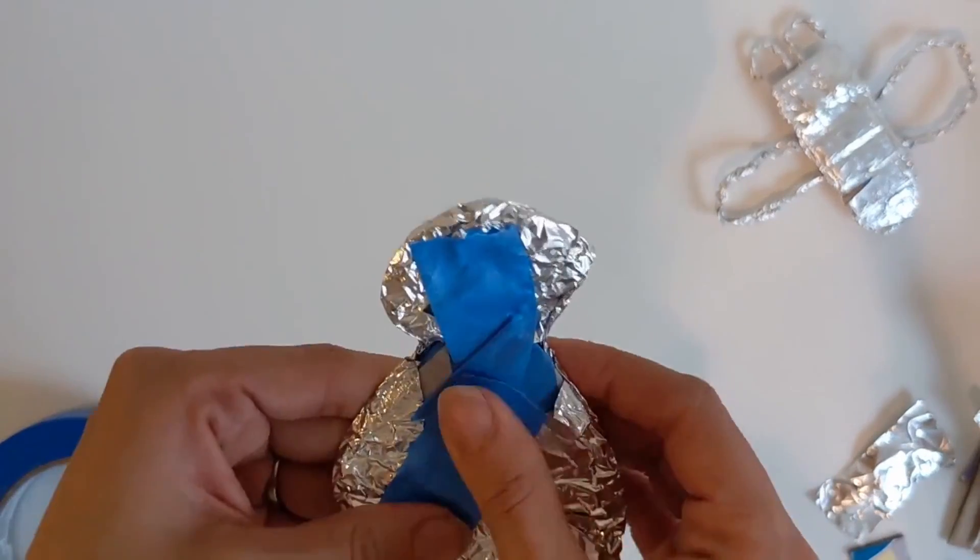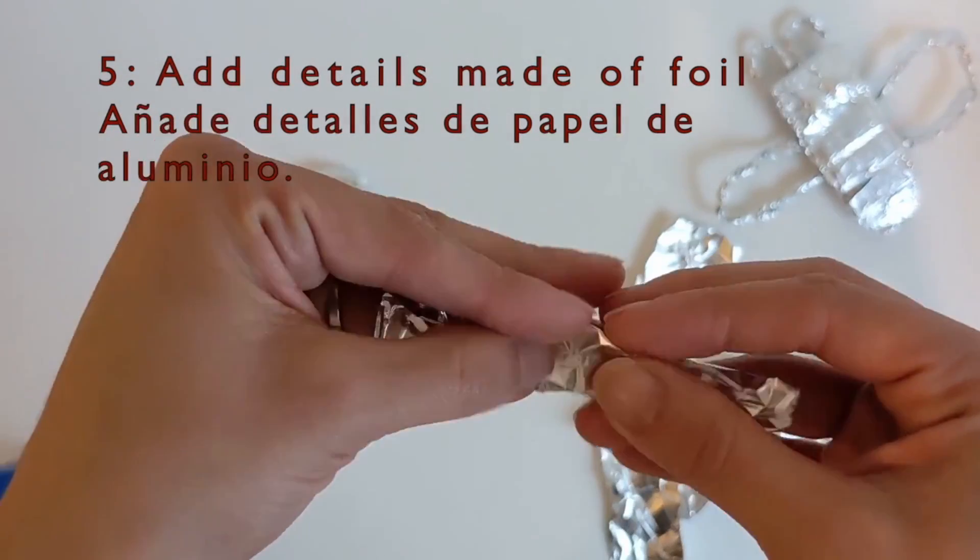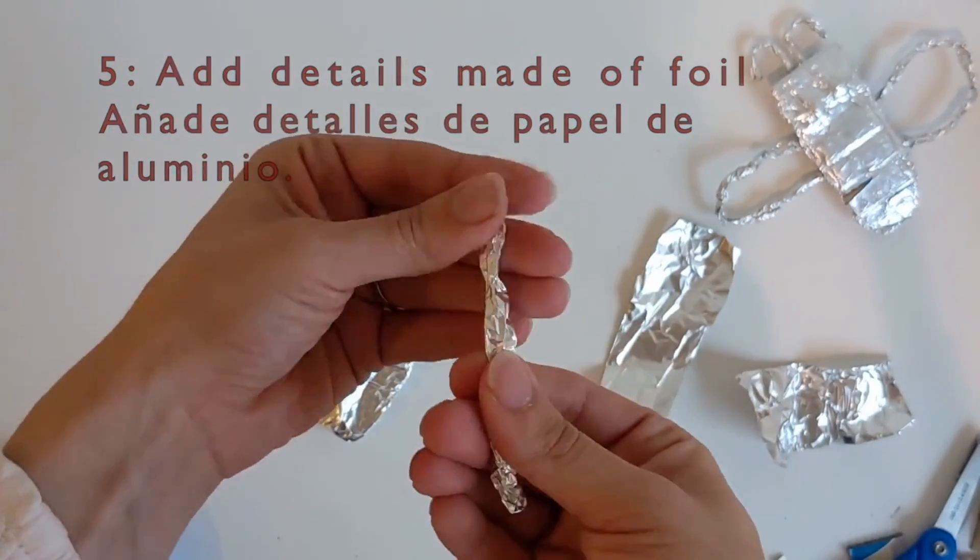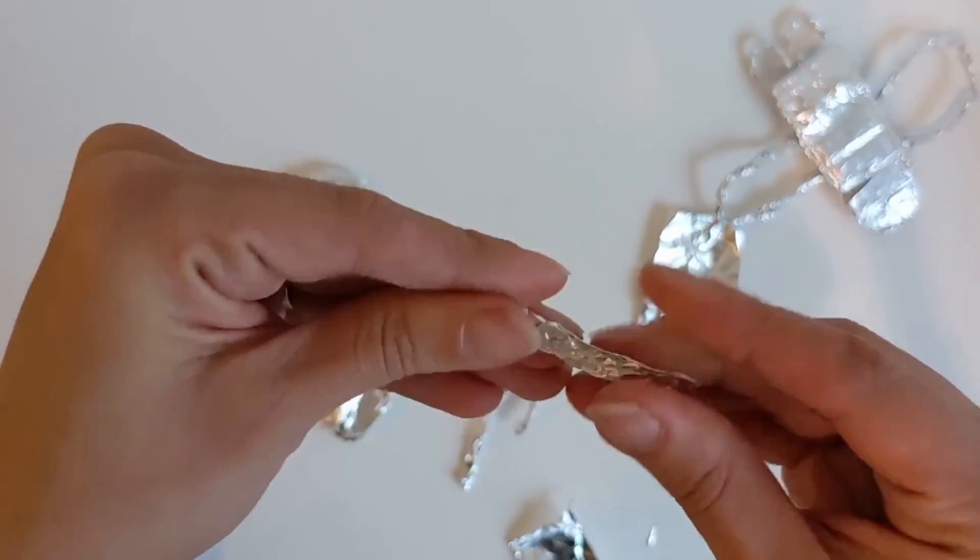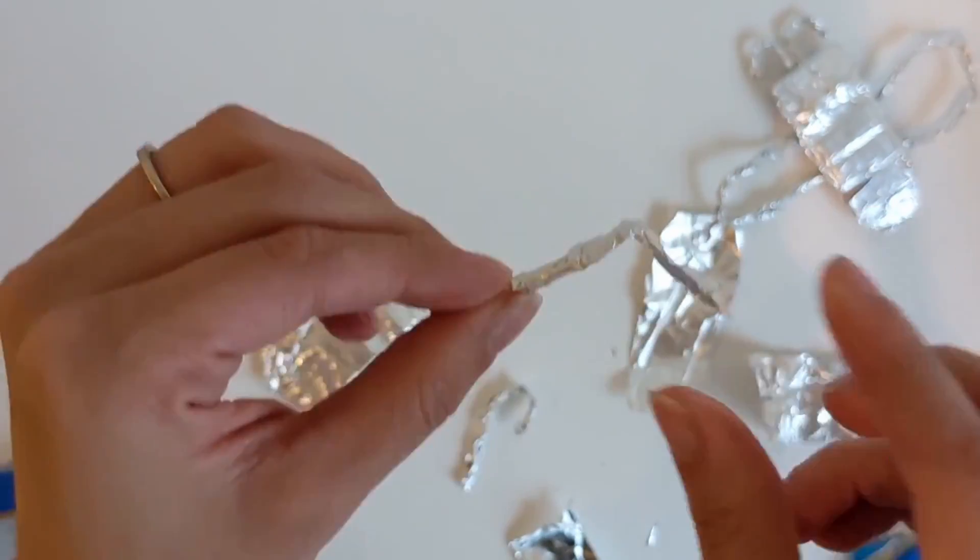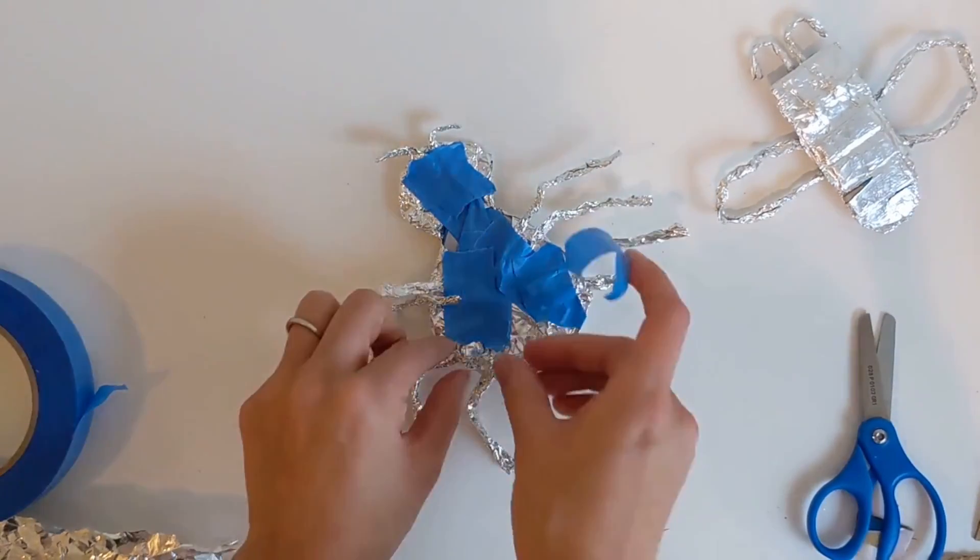Then you can use small pieces of foil to make details for your insect. Roll a piece of foil with the palms of your hands and then twist, bend, or fold it to make wings, antennae, legs, or anything else that you can think of for your bug. Tape the details to the back of your base with masking tape.